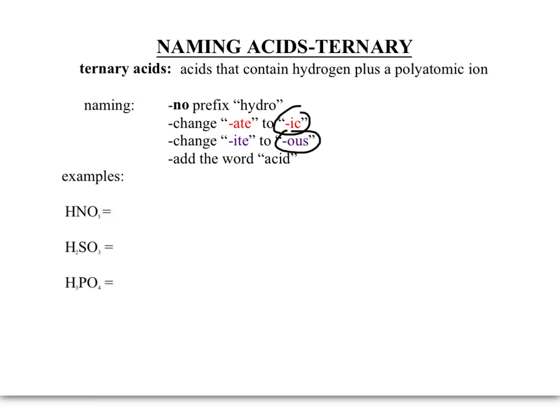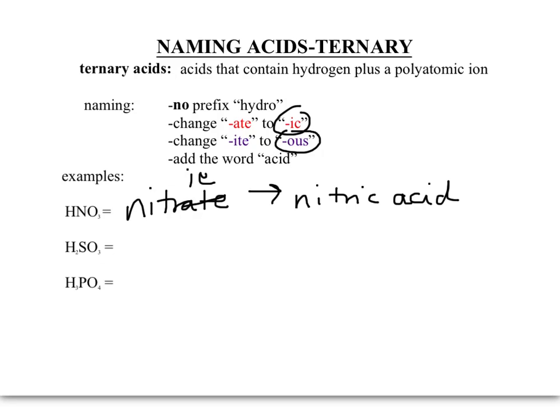In HNO3, we know this isn't binary because we see a polyatomic ion and more than two elements. So no prefix 'hydro' — we just need to figure out the name of the polyatomic ion. This is nitrate, and the '-ate' ending is changed to '-ic,' so this is nitric acid.